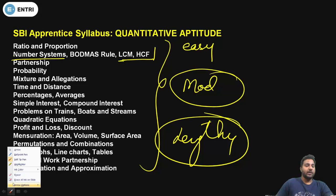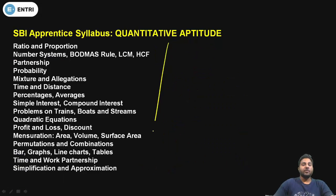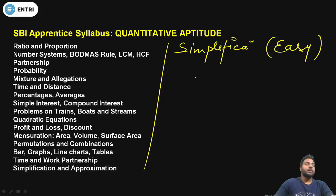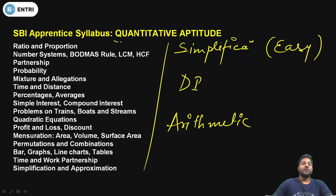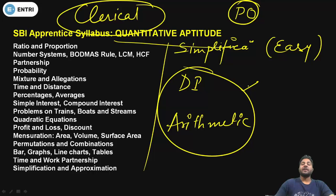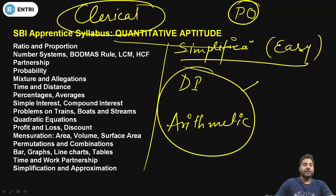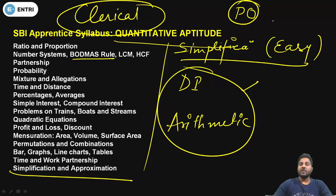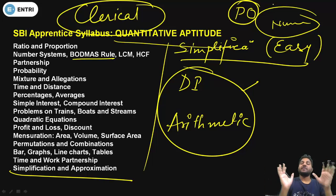You will be getting three segments in Quant: first is the Simplification segment, which is the easy segment; second is the DI segment; and third is the Arithmetic segment. According to the latest trend, from the Quant segment it is almost predictable. You will always get simplification or approximation — BODMAS rule questions — as well as quadratic equations and number series. I have put all these in the simplification segment.